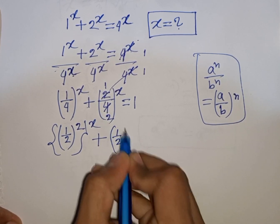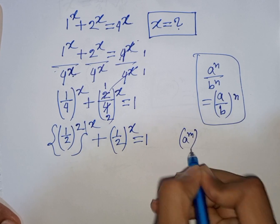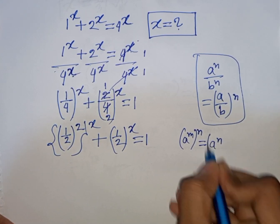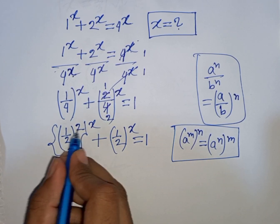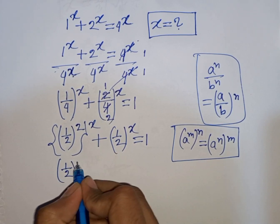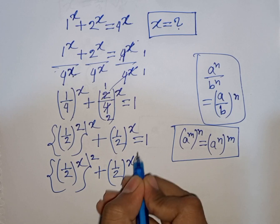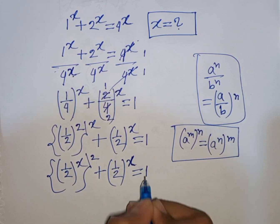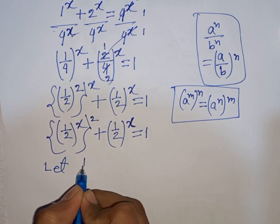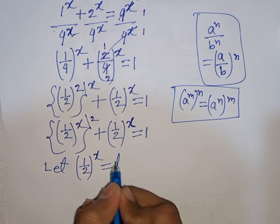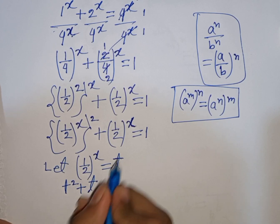So (1/2) bracket power x, meaning (1/2) bracket power x equals 1. Now we can apply the rule that a power m, bracket power n, is equal to a power n bracket power m. According to this rule, (1/2)^2 power x is the same as (1/2)^x power 2, plus (1/2)^x equals 1. Both terms have (1/2)^x in common, so let (1/2) bracket power x be substituted by t. Our equation becomes t squared plus t equals 1.